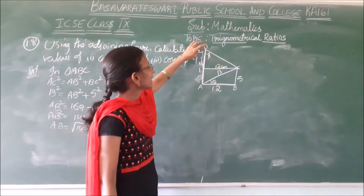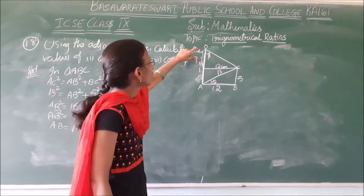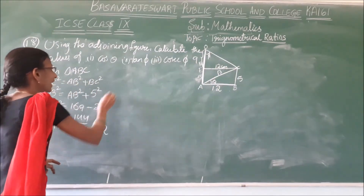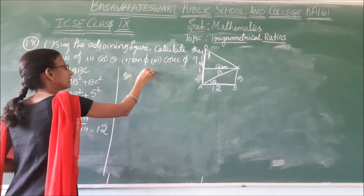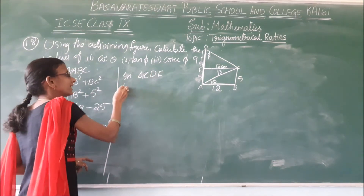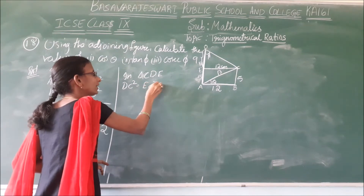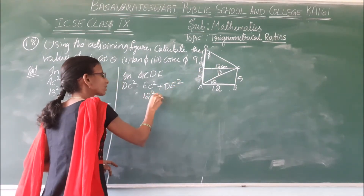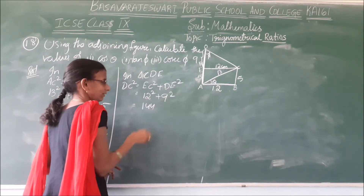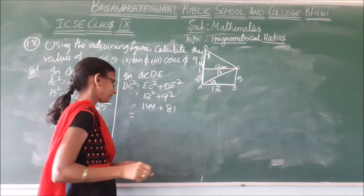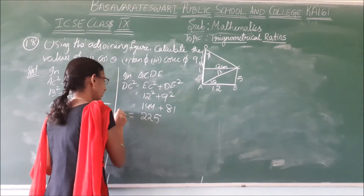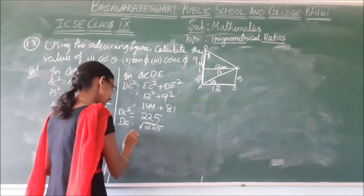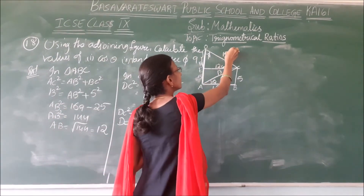Now let us look at triangle CDE. DC squared equals DE squared plus EC squared. DE is 9 and EC is 12. So DC squared equals 12 squared plus 9 squared, which is 144 plus 81, equals 225. Therefore DC equals square root of 225, which is 15.